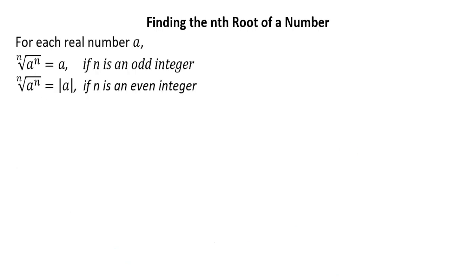For each real number a, the nth root of a raised to n is equal to a, when n is an odd integer — such as 3, 5, 7, and so on. And the nth root of a raised to n is equal to the absolute value of a, when n is an even integer — such as 2, 4, 6, and so on.